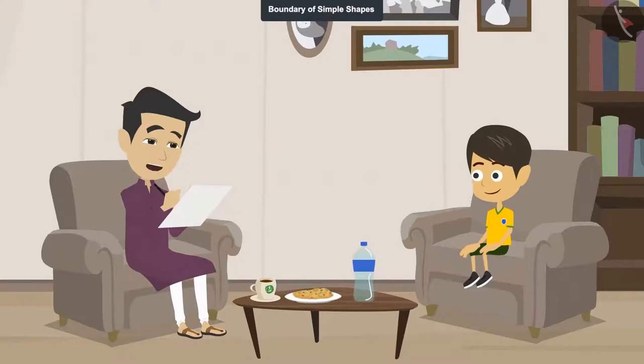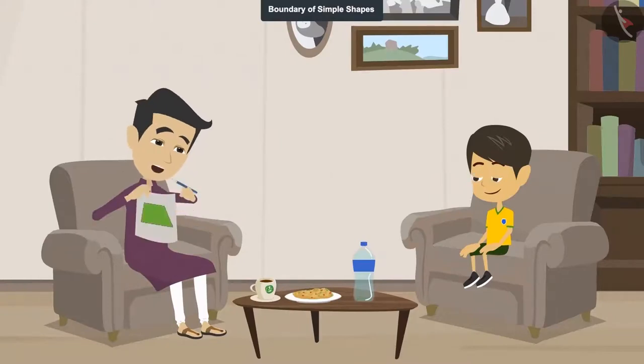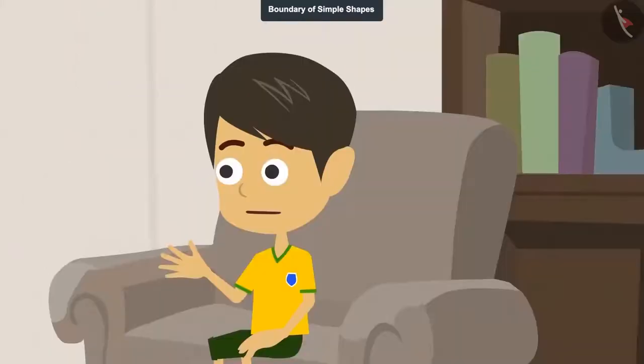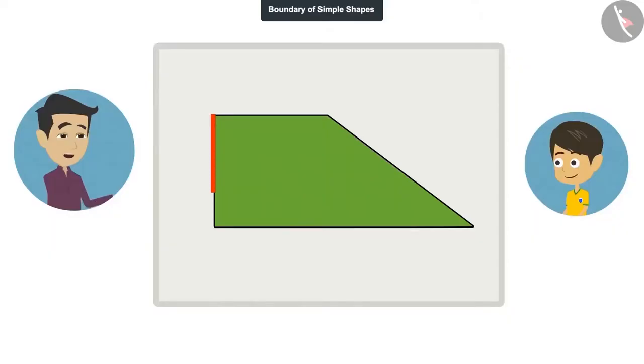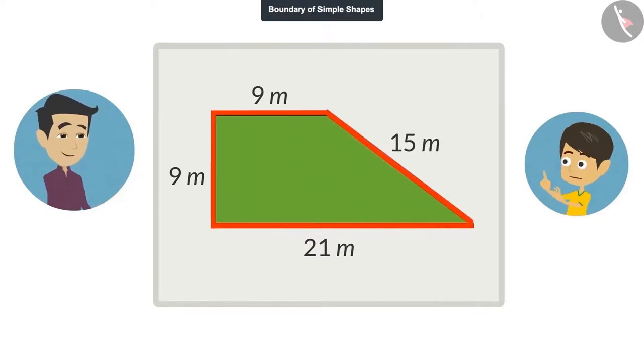I will tell you the length of all these lines. Find out the length of the boundary and tell me. Okay, tell me the length of all the lines. The length of this line is 9 meters. The length of this line is also 9 meters. The length of the bottom line is 21 meters. And the length of this slanting line is 15 meters.